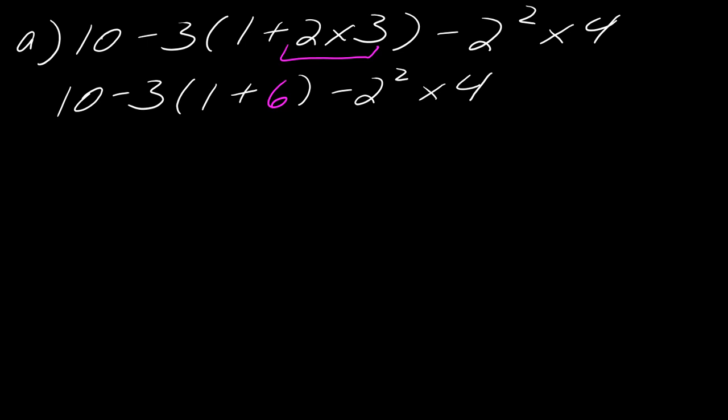Now I'm not done with the order of operations inside the parentheses still, so I still got to do that 1 plus 6 first. So now this is going to be 10 minus 3 times 7, right, this whole thing is just 7 now, minus 2 squared times 4.